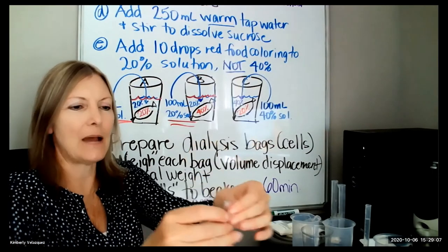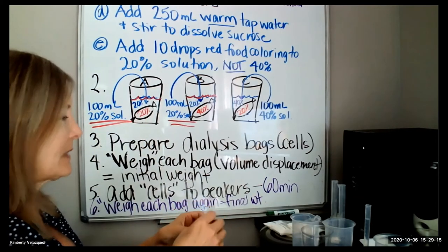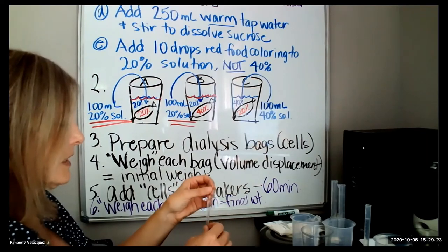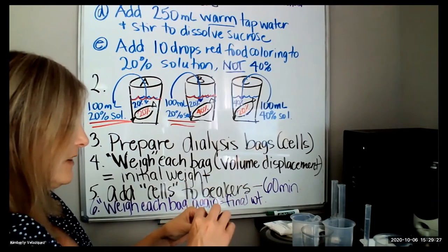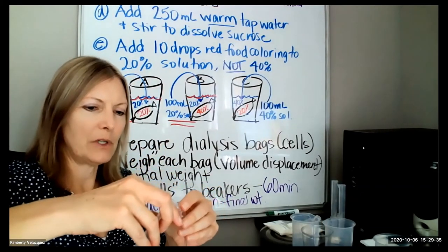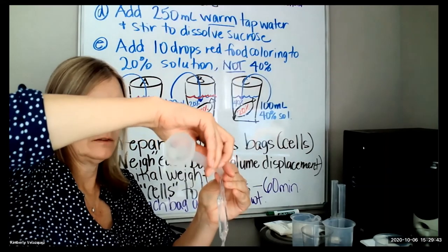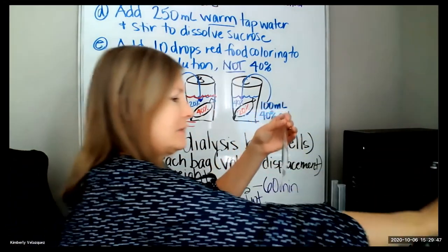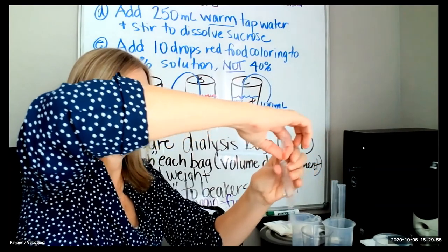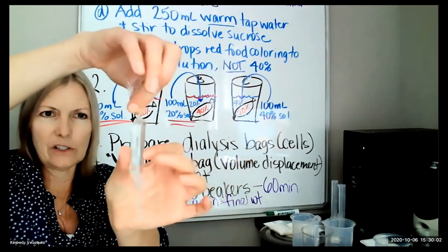Now I'm preparing bag A. Bag A needs 20% solution and I need 10 milliliters of it. Go back to your beaker with the 20% solution — it will be red; I'm using water for demonstration so mine isn't red. From your small graduated cylinder, carefully wrap the tubing around the mouth and slowly pour the solution in. Then twist the tubing down to the level of the liquid.